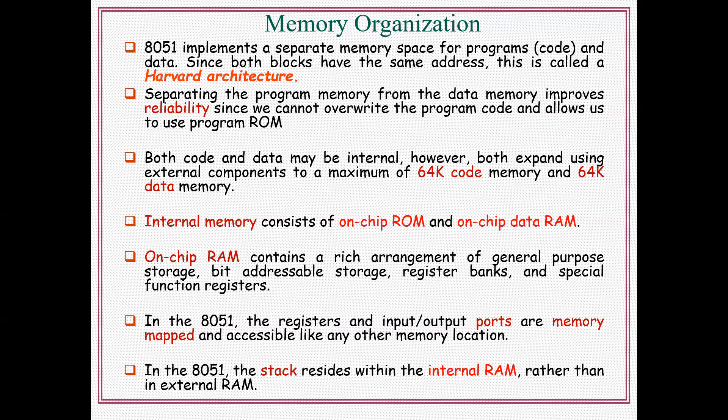Actually, internal RAM — also called on-chip RAM — is 256 bytes. That is divided into lower 128 bytes and upper 128 bytes. Lower 128 bytes are available for the user, and upper 128 bytes are available for special function registers.